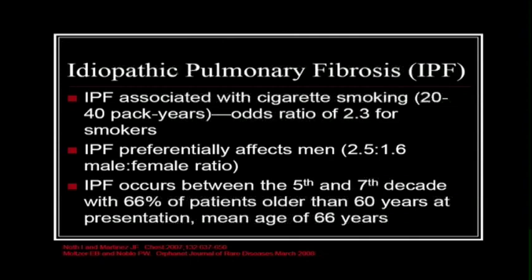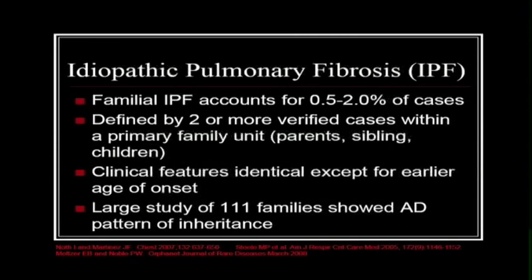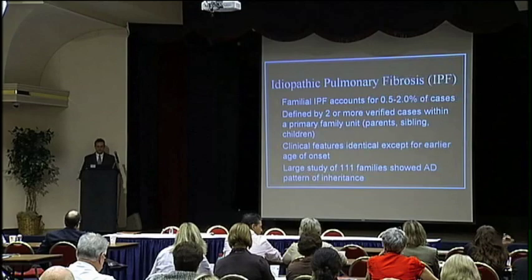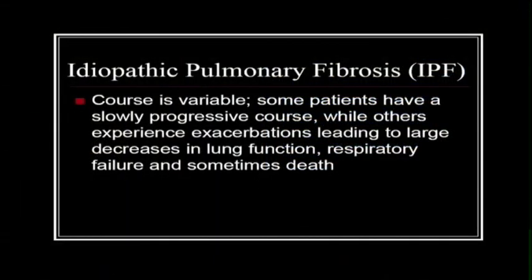The mean age of diagnosis is 66 years. Familial IPF — and Dr. Lloyd will tell you this is an underestimate — usually accounts for about 0.5 to 2% of cases, defined by two or more verified cases within a primary family unit including parents, siblings, or children. The clinical features are identical except for an earlier age of onset, and in a large study of 111 families, it showed an autosomal pattern of inheritance with variable penetrance.